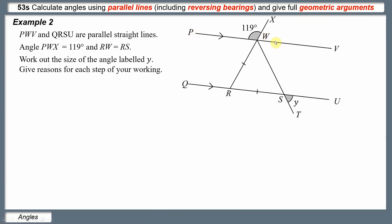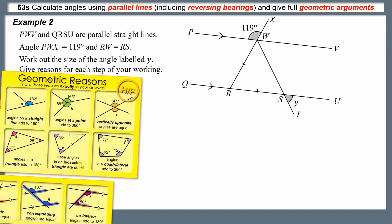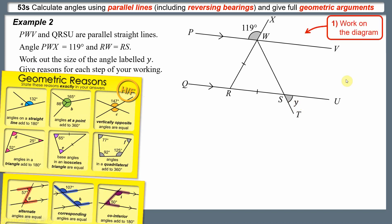In the second example, PWV and QRSU are parallel straight lines. PWX is 119 degrees, and RW and RS are equal. Work out the size of angle Y. We only know one angle this time, so the starting point should be trying to find another angle the same size as that 119-degree angle.